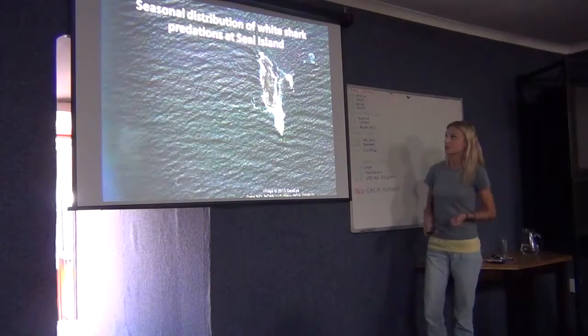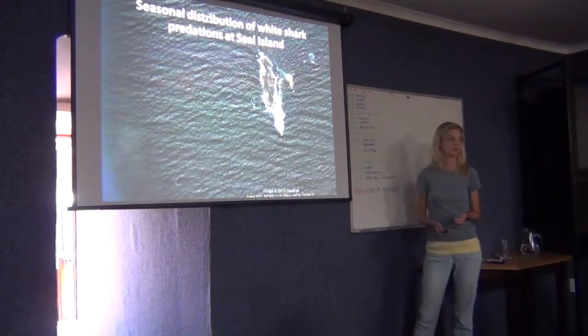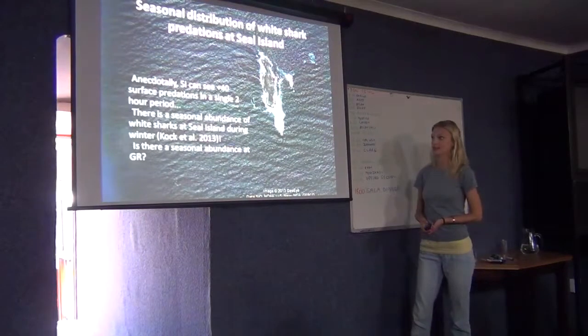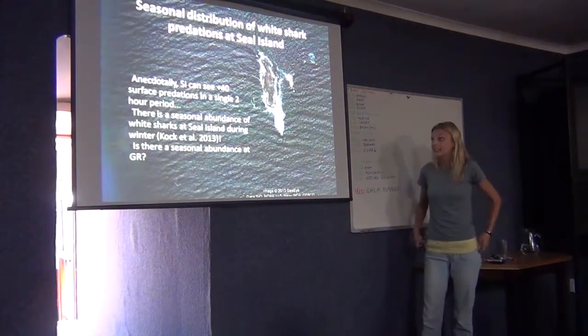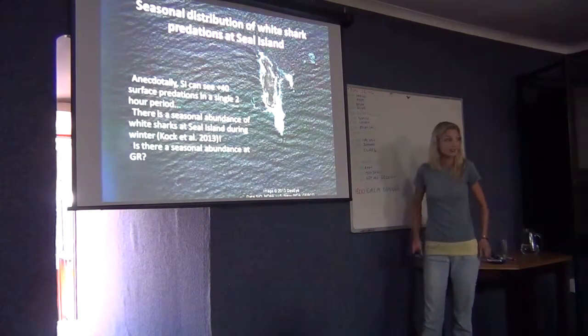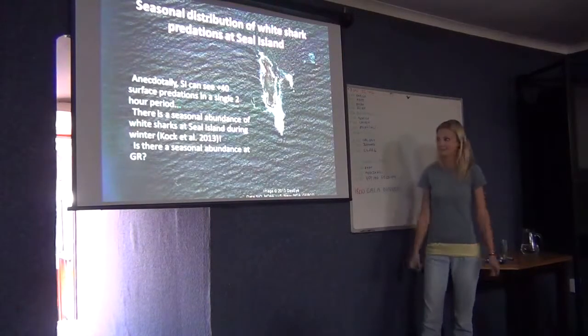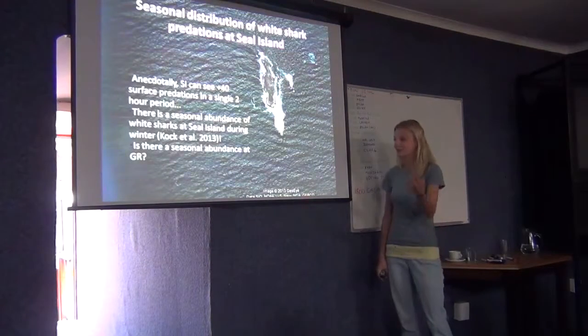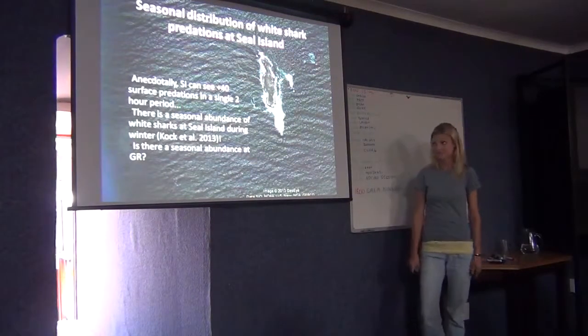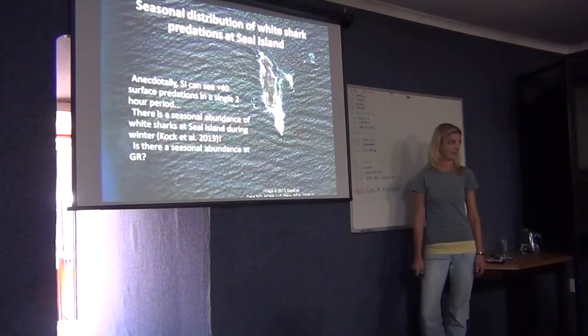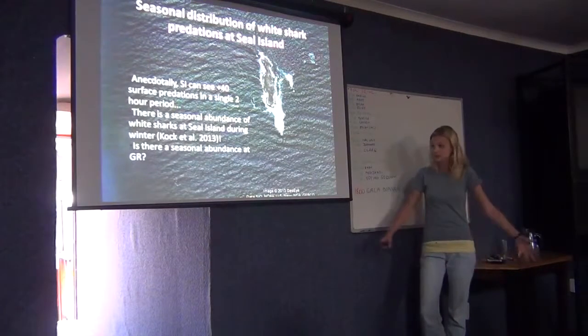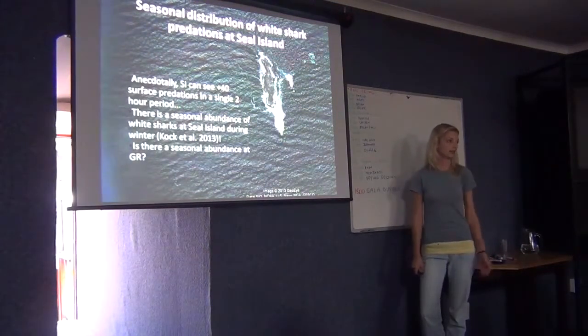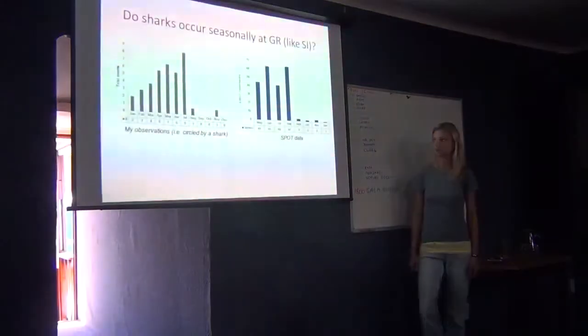So your seasonal distribution of white sharks at Seal Island, predations at Seal Island, they're there in winter, not there in summer. Classic. And as Matt mentioned earlier, Seal Island can see about 40 predations in two hours. We did not get that at Geyser Rock whatsoever. And of course this is what Alison just published. There's a seasonal abundance there in winter time. Question number one: Is there a seasonal abundance of white sharks at Geyser Rock in winter? Yes. Fantastic.